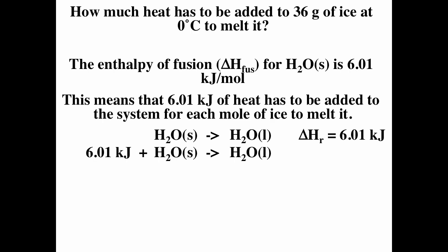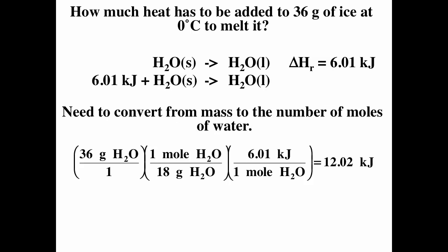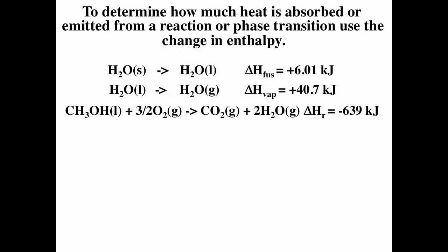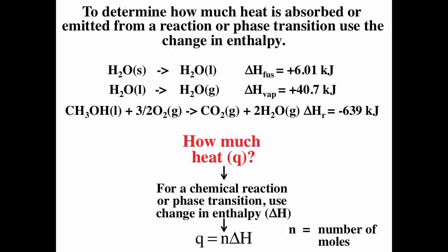We need 6.01 kilojoules of heat for every mole of ice to melt it. In our problem we're given 36 grams, so we convert 36 grams to moles by dividing by the molar mass, then multiply by 6.01, and we get 12.02 kilojoules. So 12.02 kilojoules of heat has to be added to 36 grams of ice to melt it. Whenever you have a reaction or a phase transition, we use the change in enthalpy to calculate the heat.